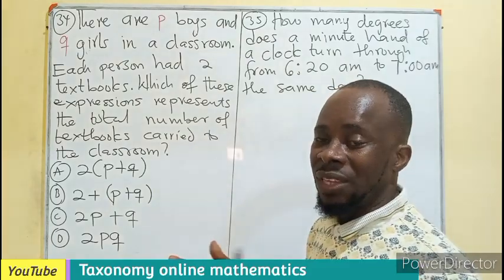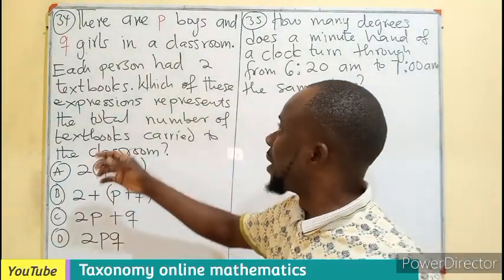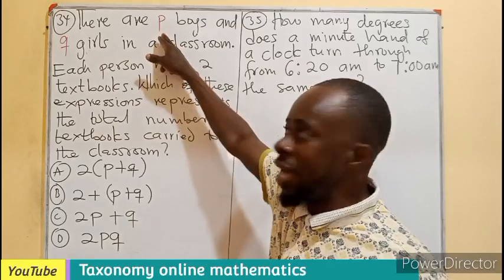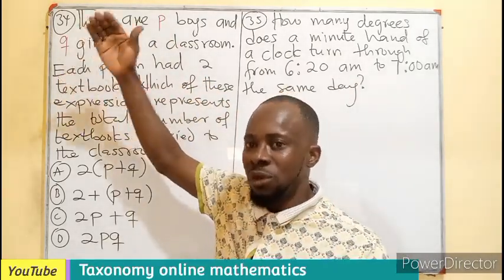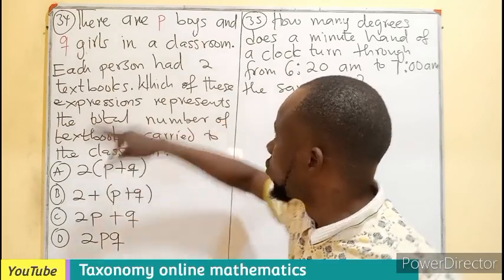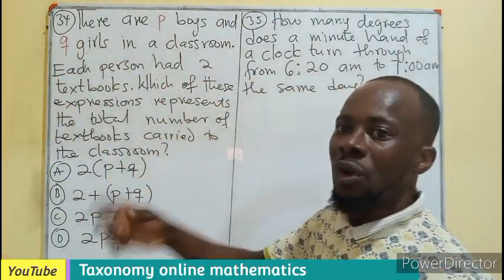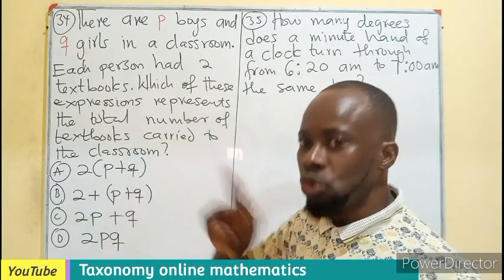The second aspect is find the total number of people in the class. If there are two boys and three girls, you're talking about five. How do you get five? Two plus three, right? So P plus Q gives you total number of students.